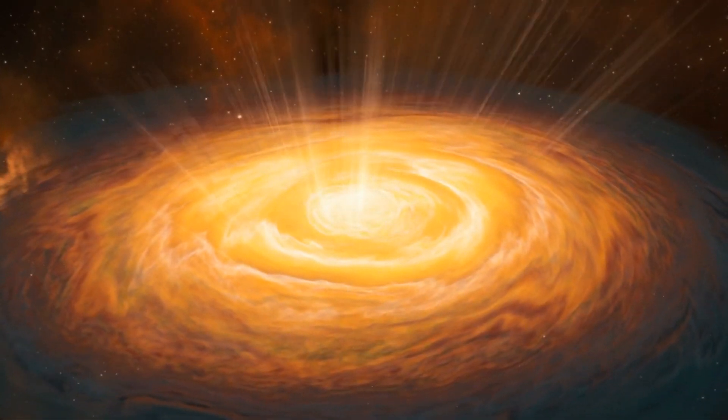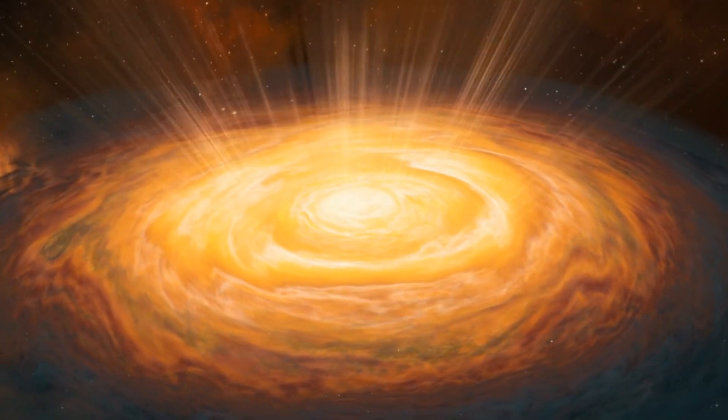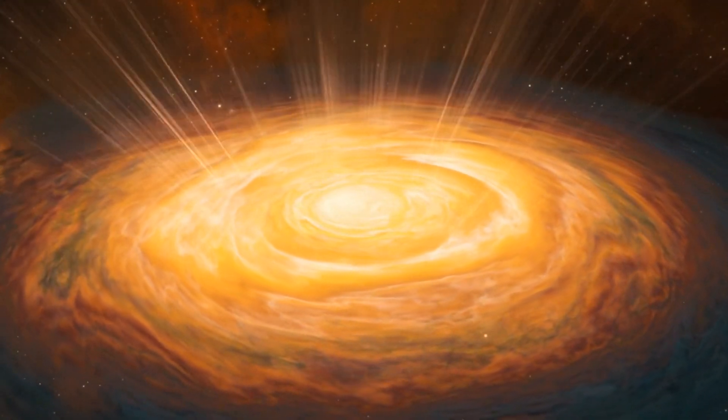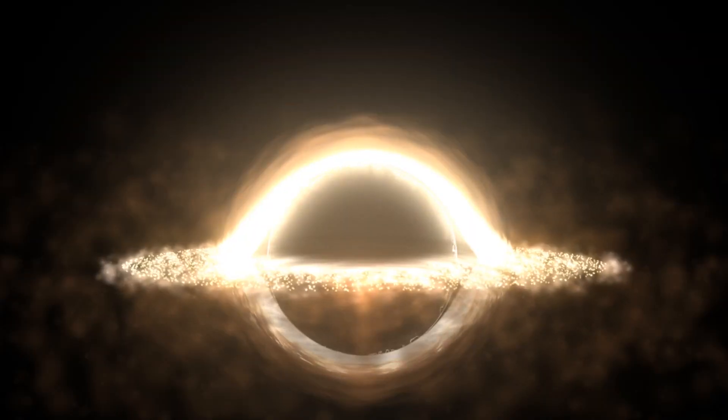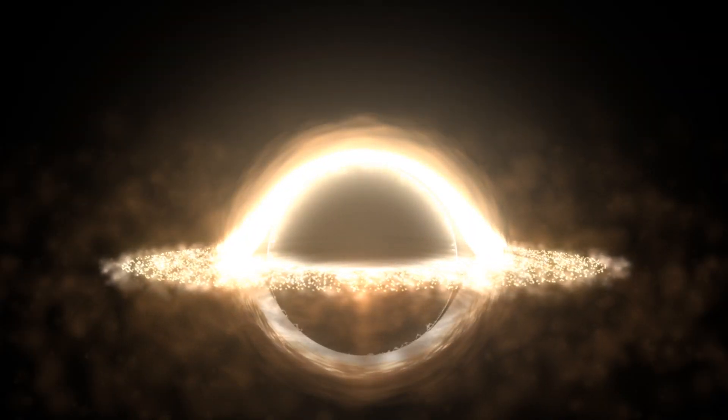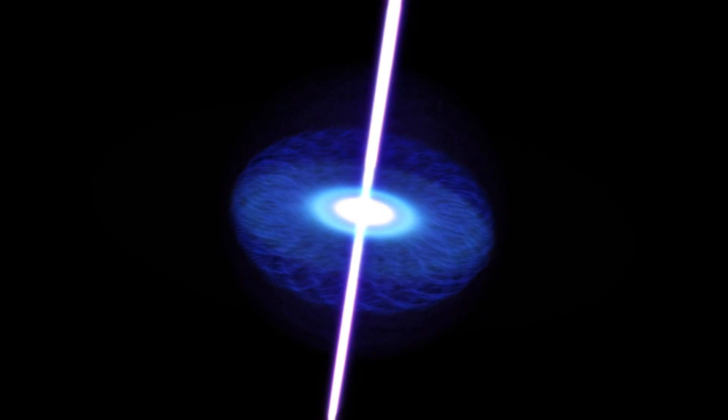S5 0014+81, as a quasar, radiates an immense amount of energy, making it one of the brightest objects in the universe. The brightness stems from the intense activity around its central black hole. As matter falls into this black hole, it forms an accretion disk, which heats up due to the tremendous gravitational forces, emitting vast amounts of radiation.